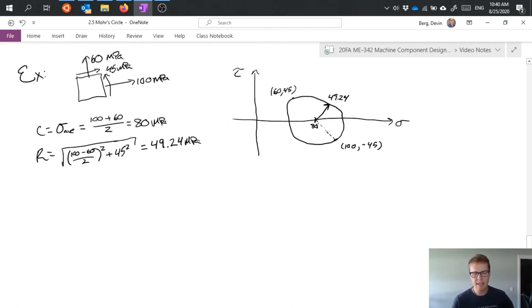And I can see that my max stress occurs up here on the x-axis. So I have an angle theta which represents that and typically this is actually labeled theta sub p.